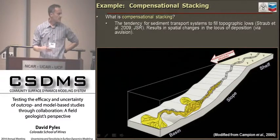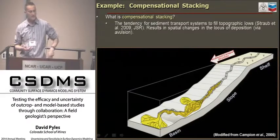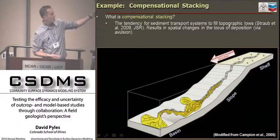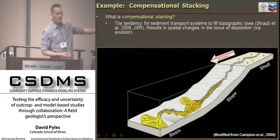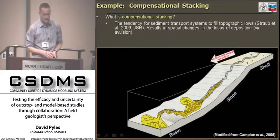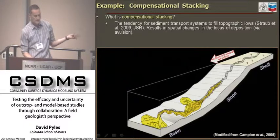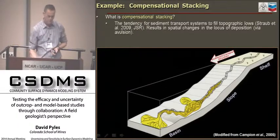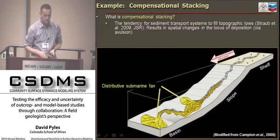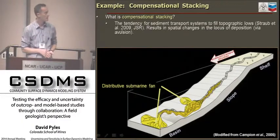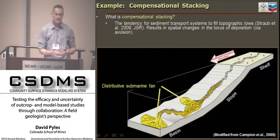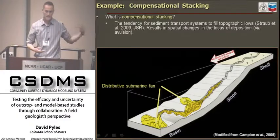This process of compensational stacking results in spatial changes in the locus of deposition by avulsion. Shown here is a generalized diagram of a shelf-to-basin profile—imagine it offshore Atlantic Margin or Gulf of Mexico. You have the shelf, and in this case at low sea level transferring off into the slope and into the basin. I want to focus on the slope-to-basin profile and these distributive submarine fans, which are common on all siliciclastic continental margins.